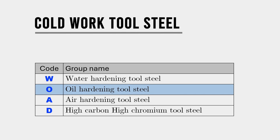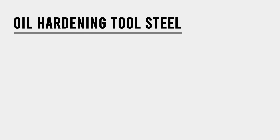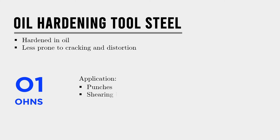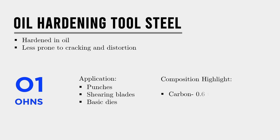The O grade, or oil hardening tool steel — popular grade O1, also commonly known as OHNS — is hardened in oil, making it less prone to cracking and distortion. These are widely used for shearing blades, punches, and dies. They typically contain 0.6 to 1.4% carbon along with small amounts of chromium and vanadium.